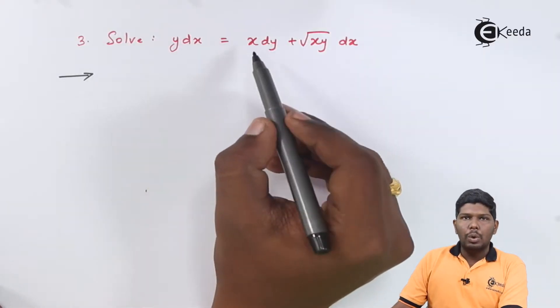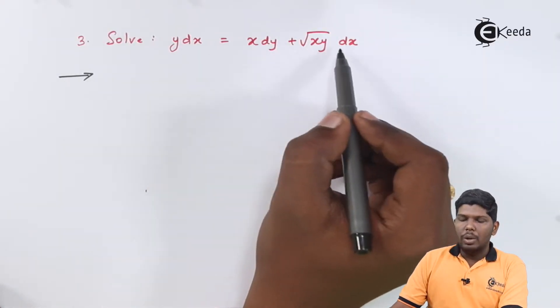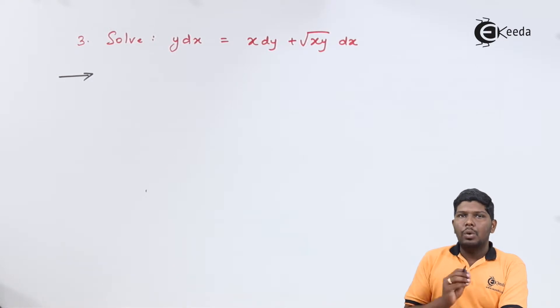y dx is equal to x dy plus under root xy dx. Again, the first step will be to find the value of dy by dx. For that, we can collect the dy terms on the left-hand side and the dx term on the right-hand side.